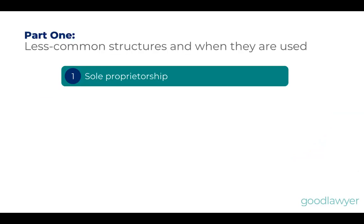First is the classic sole proprietorship — probably the easiest to explain. The business is you and you're the business. You can take expenses off your taxes and even have a business name, typically registered with a provincial entity like Service Ontario. But if you're registering a business name, all you're really doing is listing an alias — making it easy for people to know that a trade name like 'Hack Me Plumbing' is in fact you, Joe Smith.